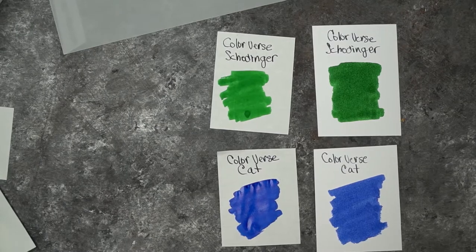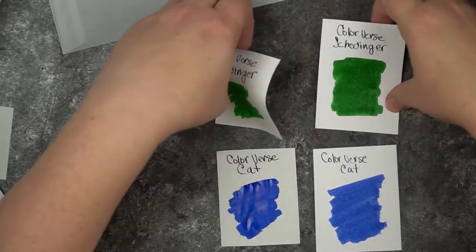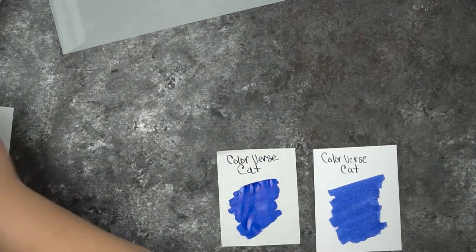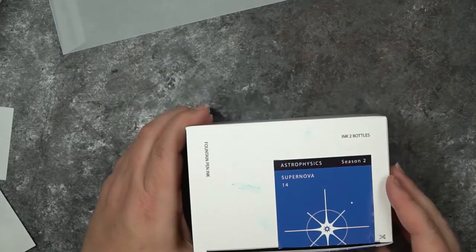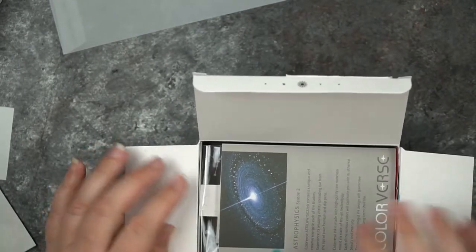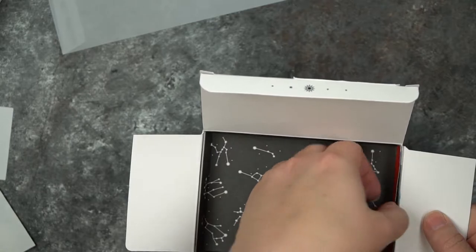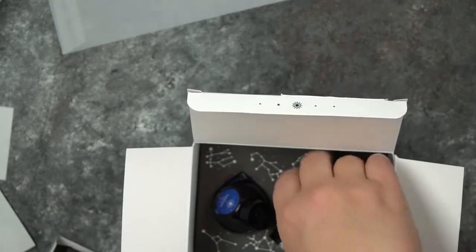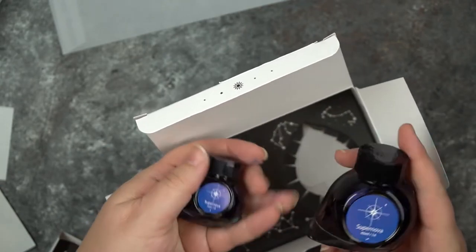They're really nice inks. Now, the one that I did open was the Supernova. You can tell that in just a second because I managed to spill ink all over the place. This is, I guess, I don't remember if it was season one or season two. This is a single color of ink and it comes with both bottles are the same.